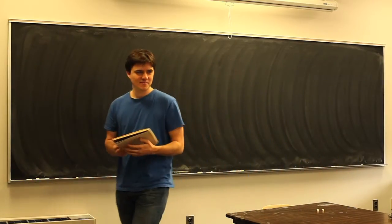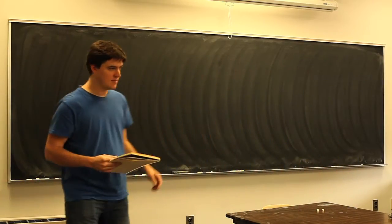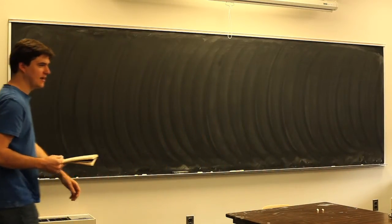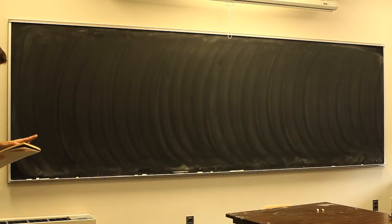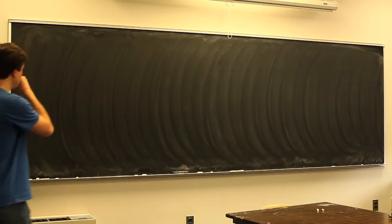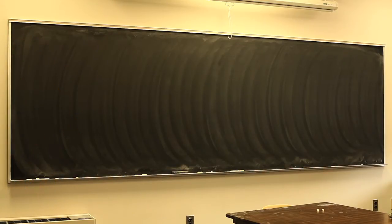Last time we did modular curves with the complex numbers. Today we're going to talk about modular forms and Hecke algebras, still over ℂ. I want to start by talking mostly about modular forms of level one and say a little bit about how they generalize to higher level.